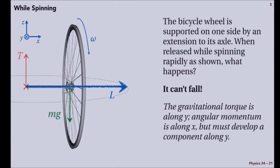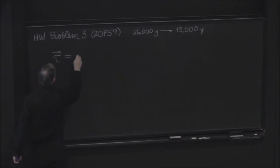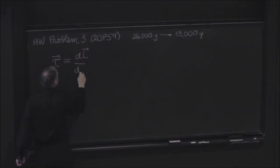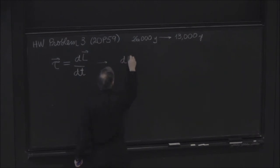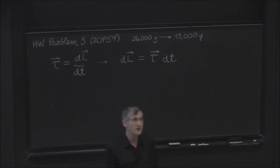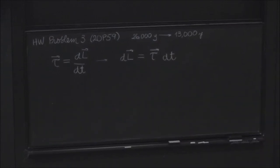So the big value of L of angular momentum, the spin angular momentum of the bicycle wheel, which is initially aligned along x, must develop a component along y because torque causes the change in angular momentum. So therefore, if I wait a very small time, the change in the angular momentum will be equal to the torque times a little time interval. So as I wait, the change in the angular momentum has to be in the direction of the torque.